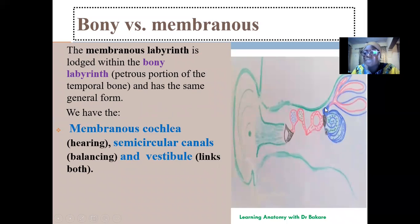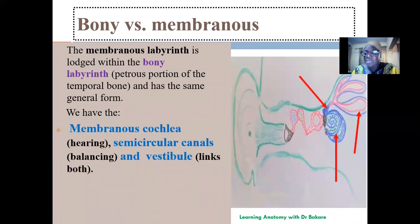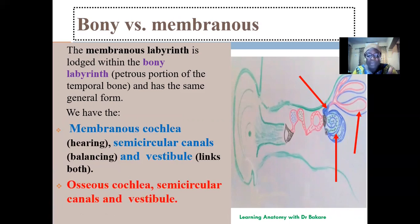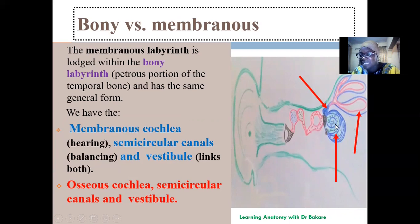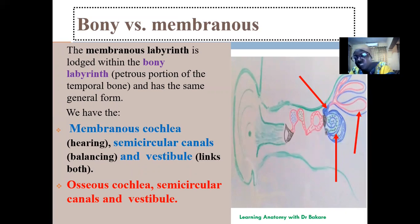The inner ear is subdivided into three parts: the cochlea, the vestibule, and the semicircular canals. These structures are membranous and caved within the bone. The vestibule connects the cochlea with the semicircular canals. We also have the osseous labyrinth — the osseous cochlea, the osseous semicircular canal, and the osseous vestibule. The membranous and osseous structures share the same configuration; the membranous labyrinth is embedded within the bony labyrinth.